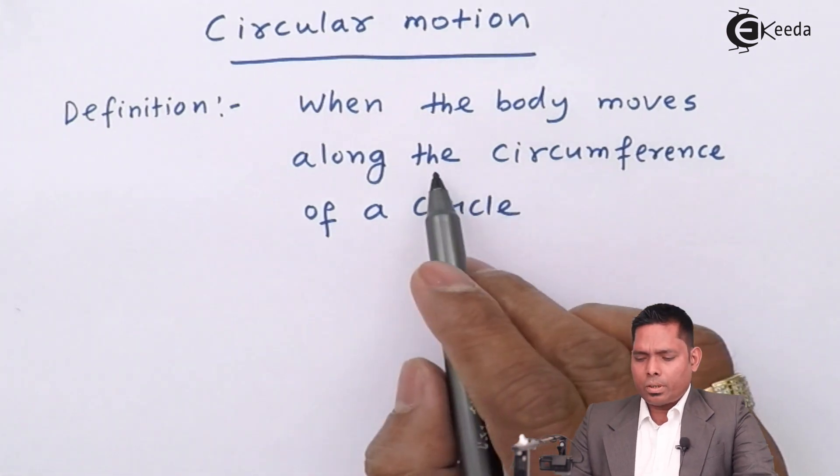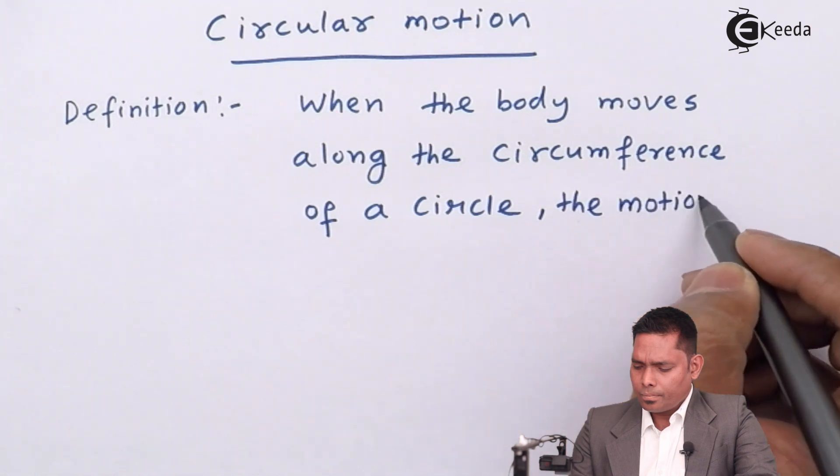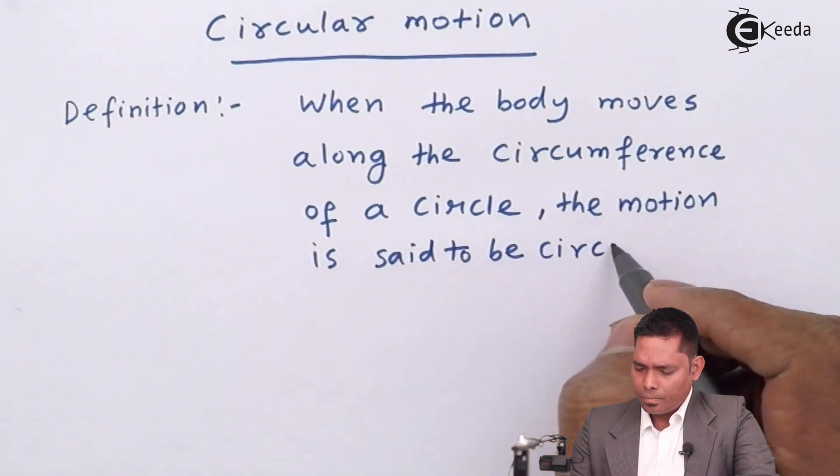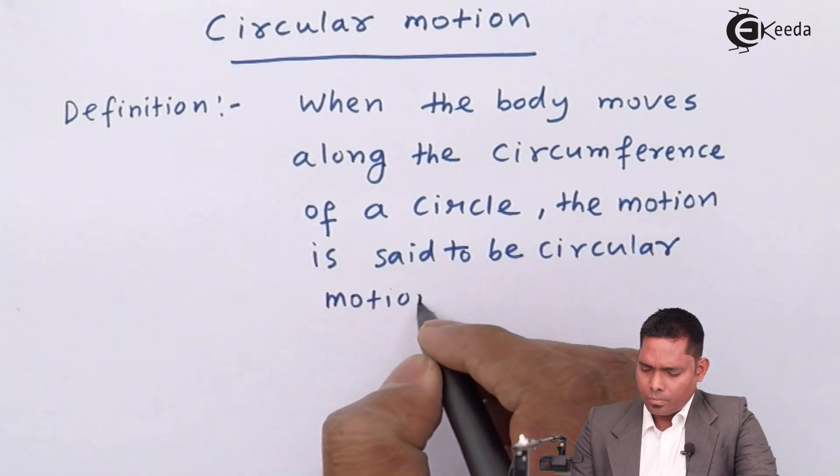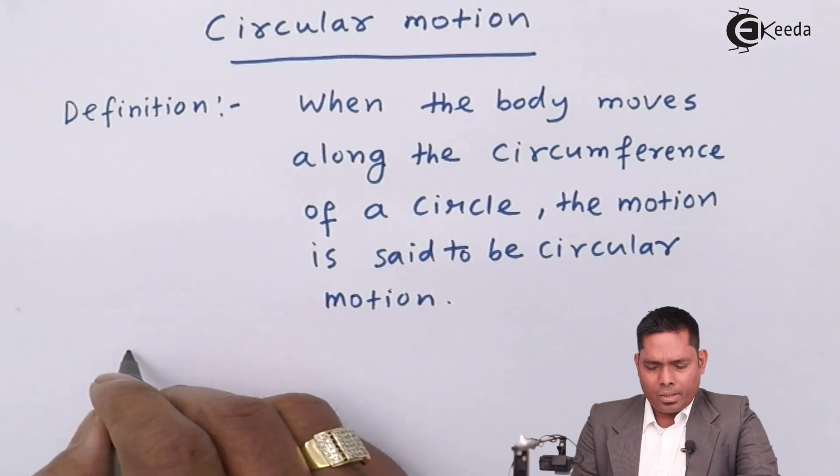When a body moves along the circumference of a circle, motion is said to be circular motion. Let us take a few examples.